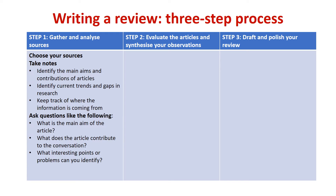For each article, make sure you identify its main aim and contribution. The aim tells you what the authors wanted to find, and the contribution — usually found in the discussion — is the new knowledge the authors contributed by answering their main research question and interpreting their results. When taking notes, pay attention to current trends and discoveries, but also gaps — in other words, what is currently known and what is not known.